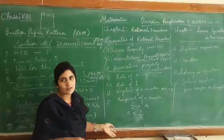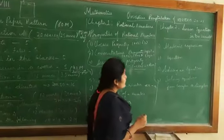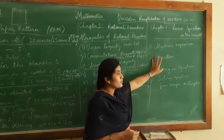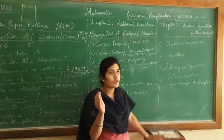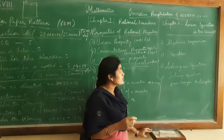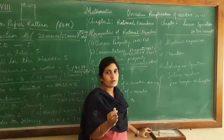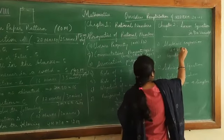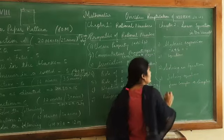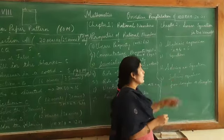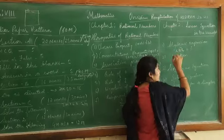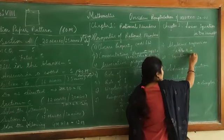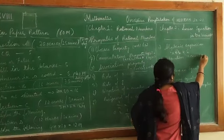Now let us move on to chapter 2: Linear Equations in One Variable. You already learned about algebraic expressions. An algebraic expression is where variables and constants perform some actions together. For example, x plus 4 equals 5 - here x is the variable, plus is the operator, 4 is the constant, 5 is also a constant, and the equality sign separates LHS from RHS.